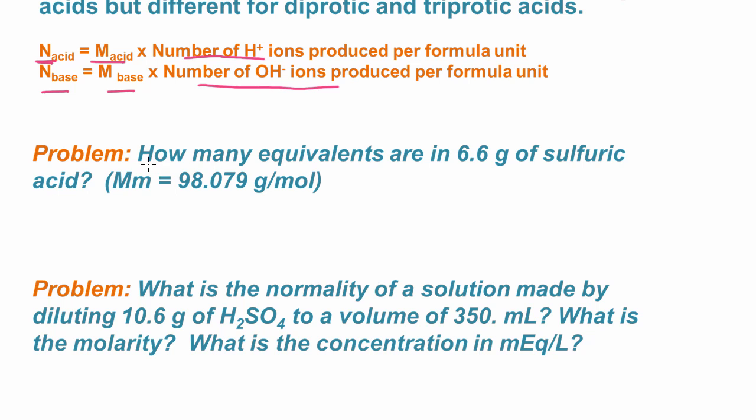So here we're asked how many equivalents are in 6.6 grams of sulfuric acid. We're given the molar mass of the sulfuric acid. So first thing I want to do is I have to convert that to moles. And we know that I looked up the molar mass for sulfuric acid. It's 98.079 grams. And that's per mole.